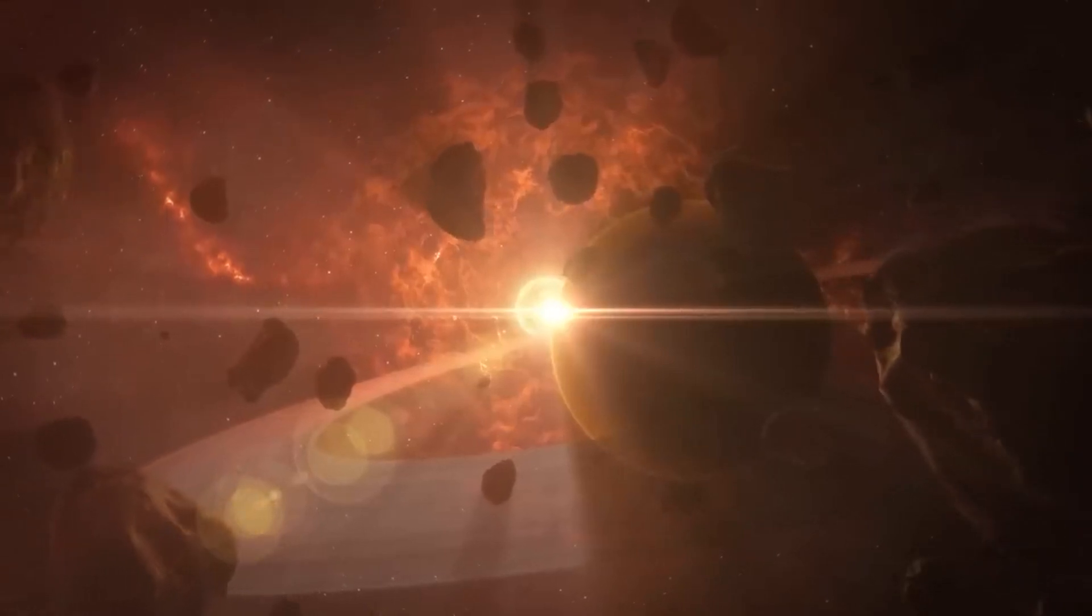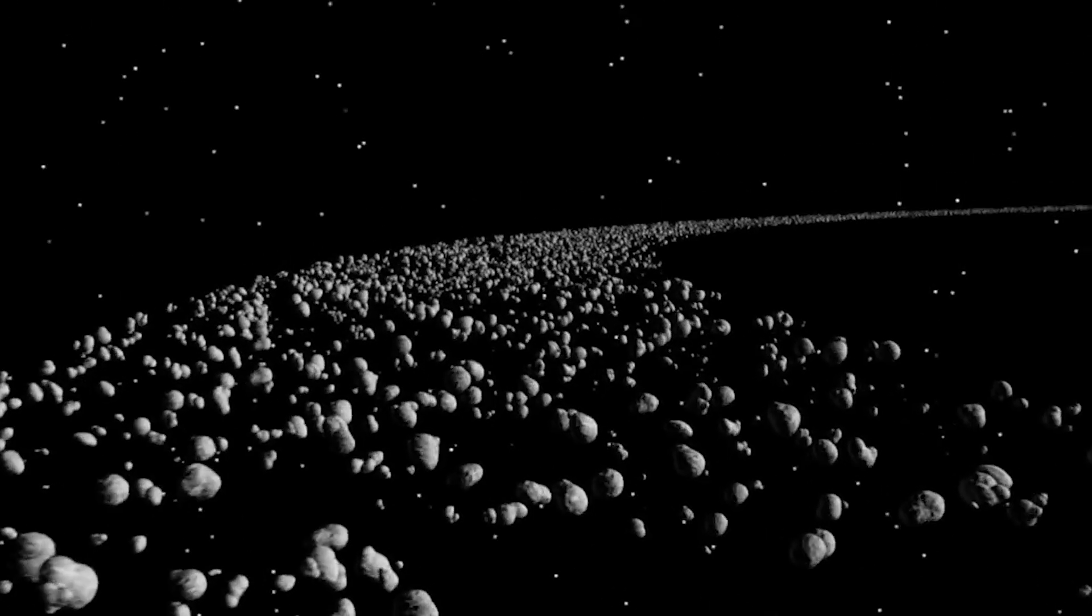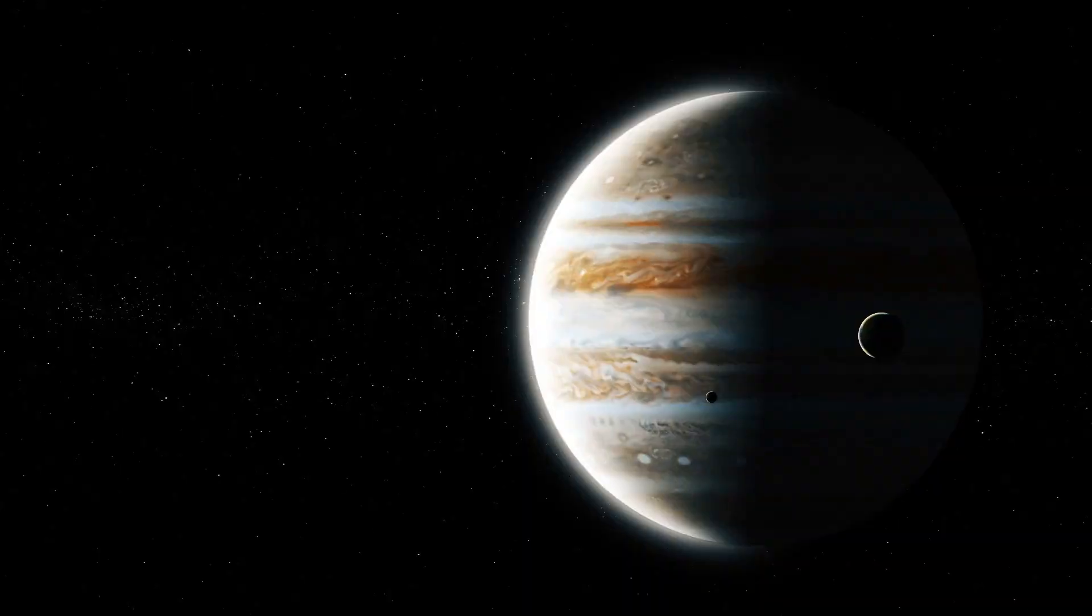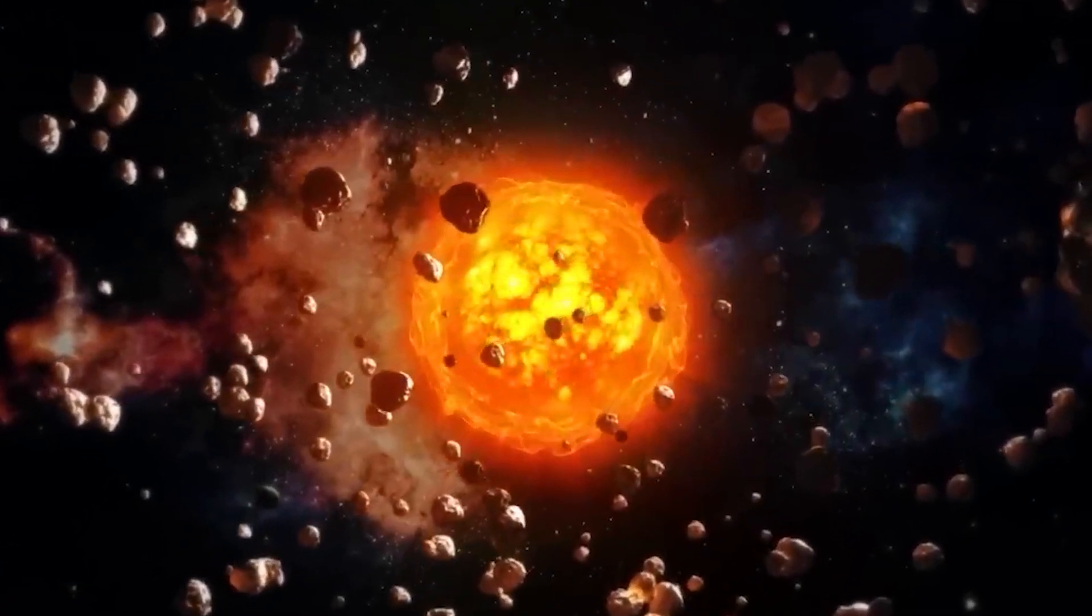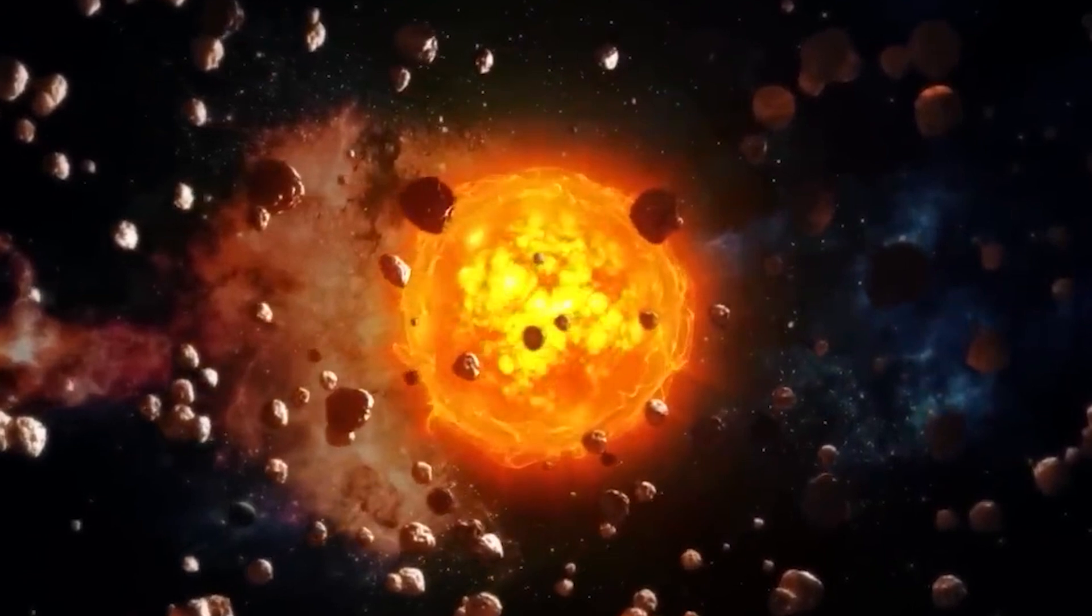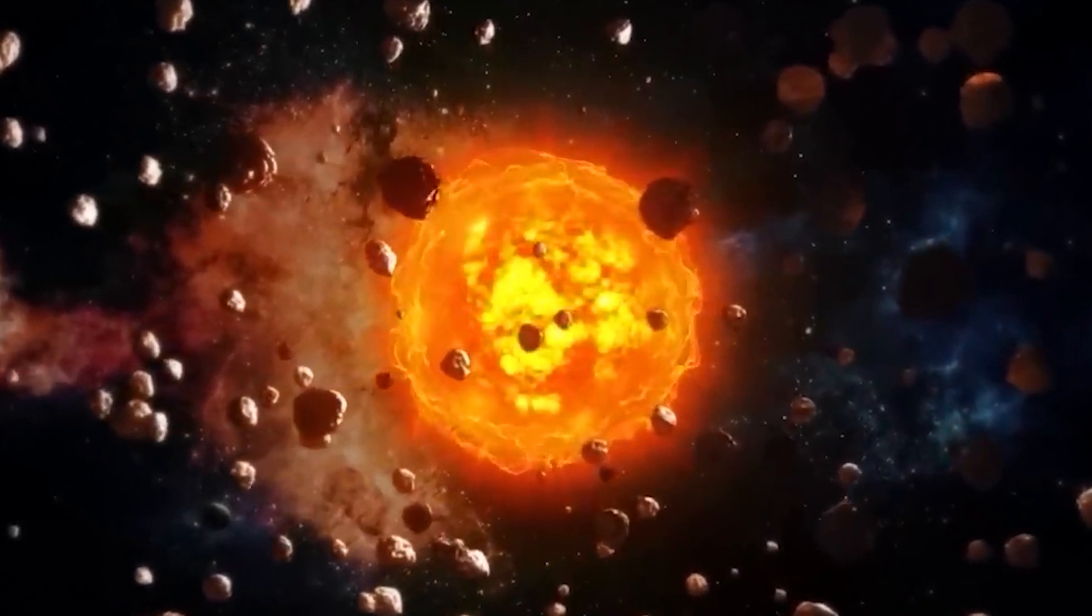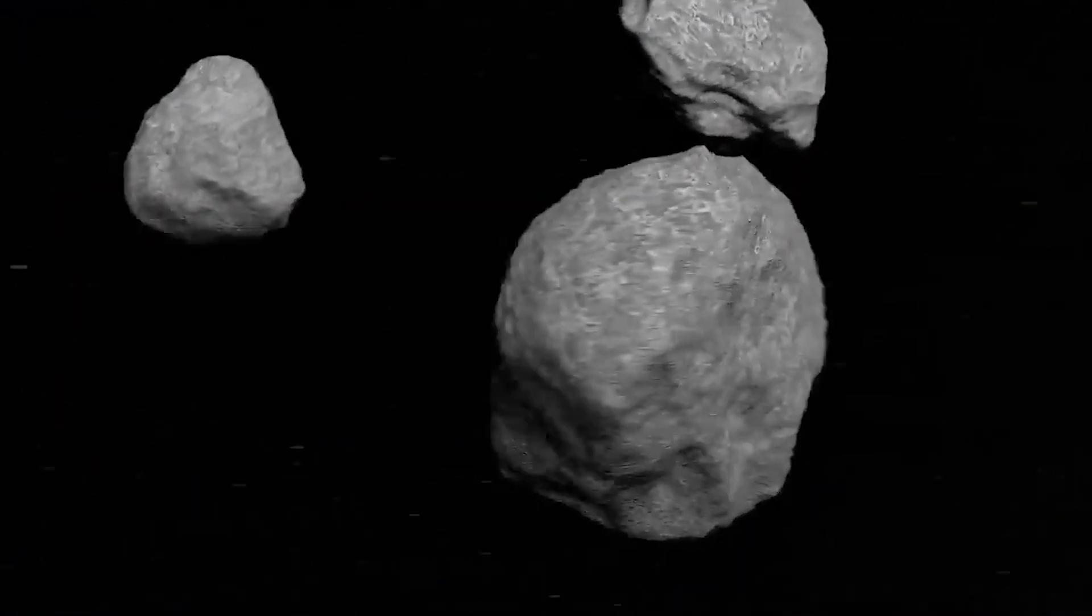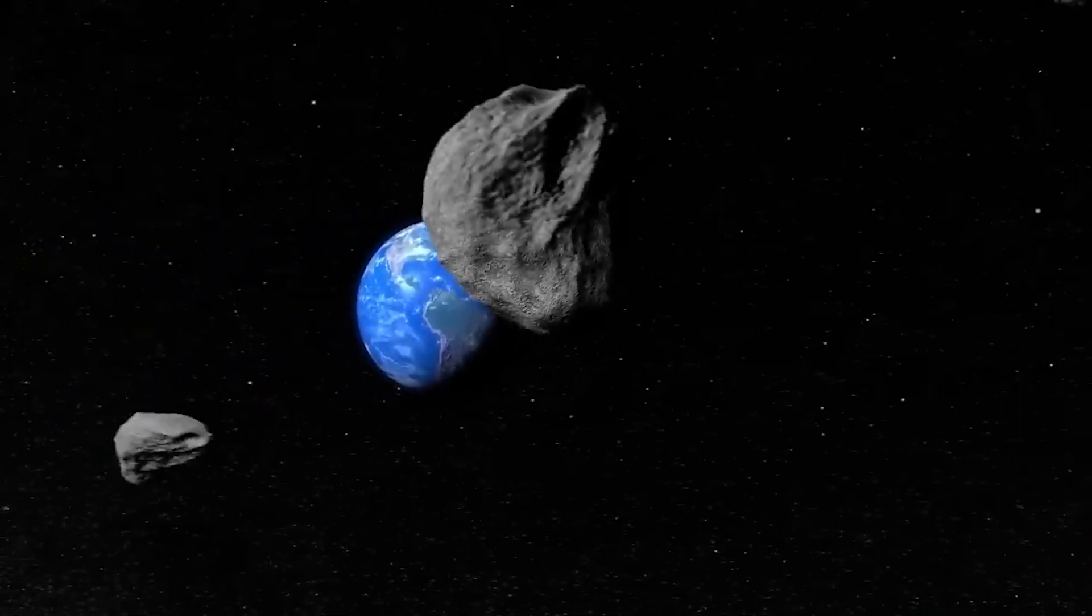Most asteroids orbit the sun and hang out in the asteroid belt between Mars and Jupiter. They're believed to be remnants from the dust and gas cloud that swirled around when our solar system was born. Some bits didn't join together to make planets and stayed as smaller leftover pieces, now known as asteroids.